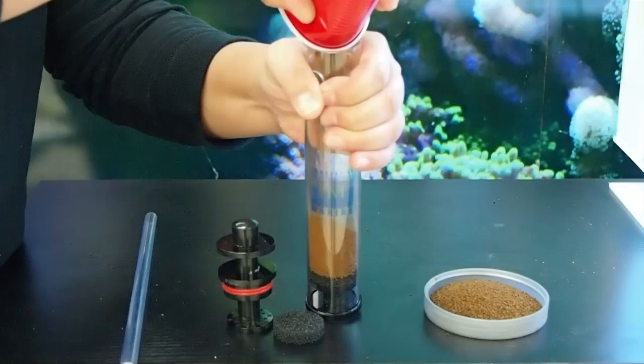The same rule applies though. If the GFO is fine, you'll take the additional sponges and double up on the bottom and on top.